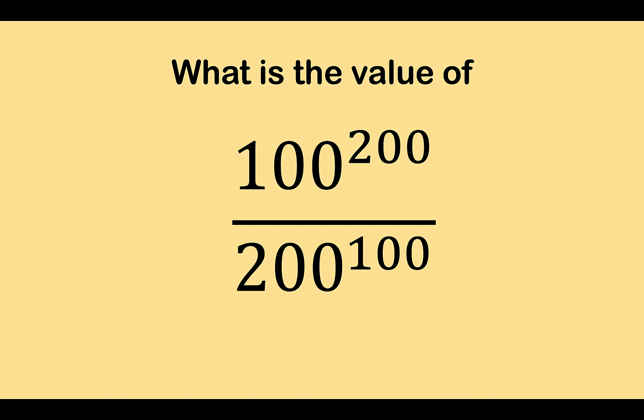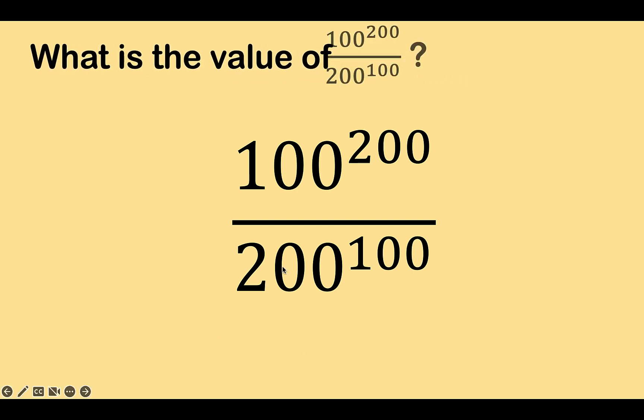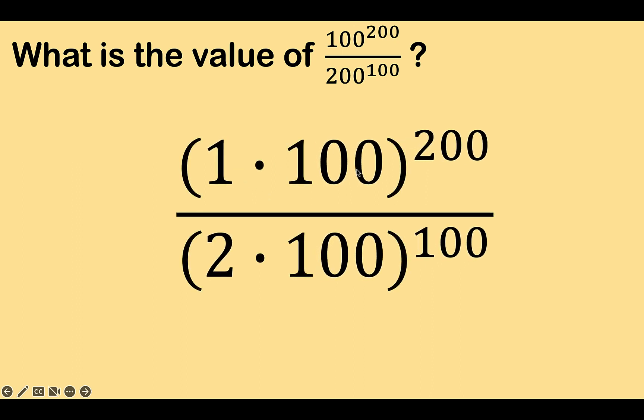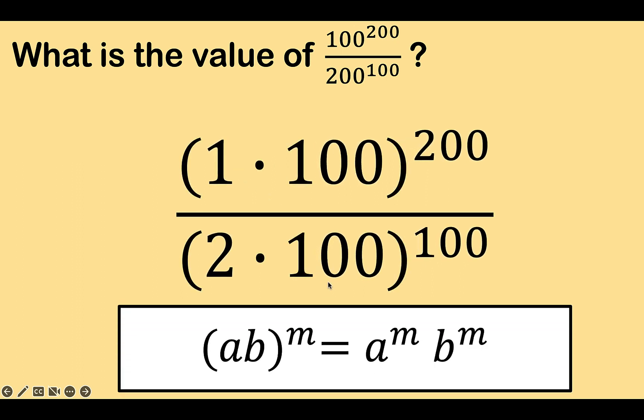Now let's solve this problem together. Let's begin by splitting this 200 as 2 times 100, and of course the numerator is 1 times 100. Now let's recall the power of a product property of exponent. If you have the product a times b raised to m, that is equal to the first factor raised to the exponent and the second factor raised to the same exponent.